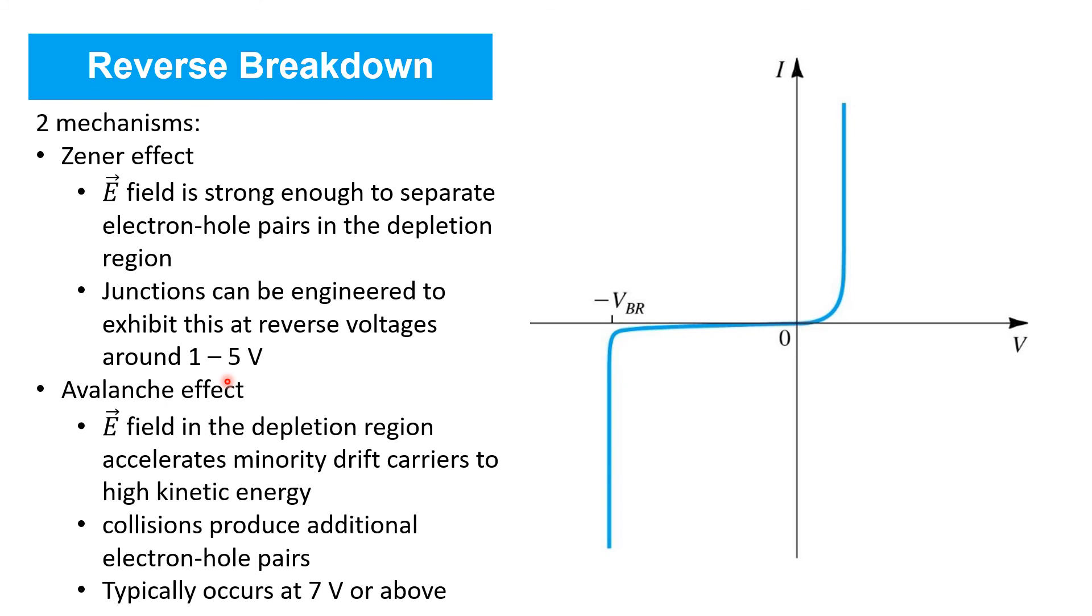The other mechanism that gives rise to reverse breakdown is the avalanche effect. In this case, the electric field in the depletion region accelerates minority drift carriers that show up there to very high kinetic energy. As they travel through the depletion region, collisions produce additional electron hole pairs. Those additional electron hole pairs are also accelerated by the strong electric field there. And further collisions produce more electron hole pairs. And the result is an avalanche effect resulting in a relatively large reverse current arising. The avalanche effect typically occurs at reverse voltages of seven volts or more.